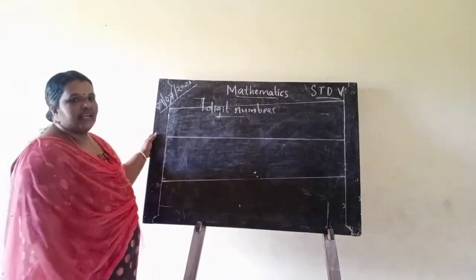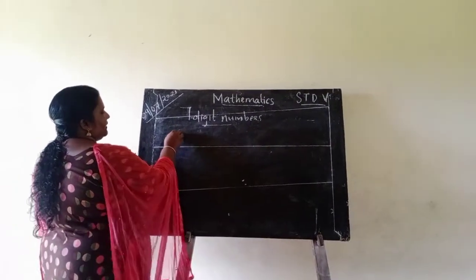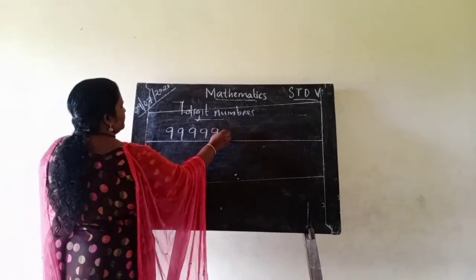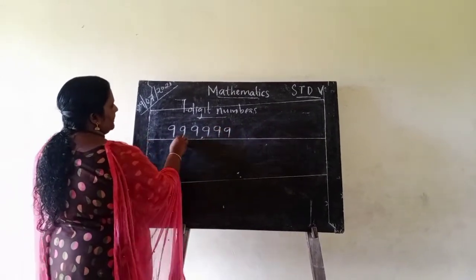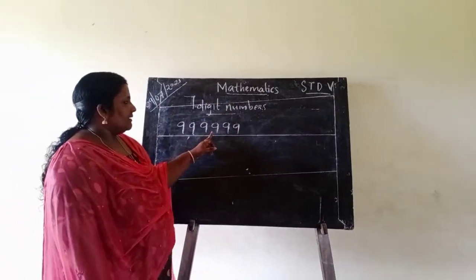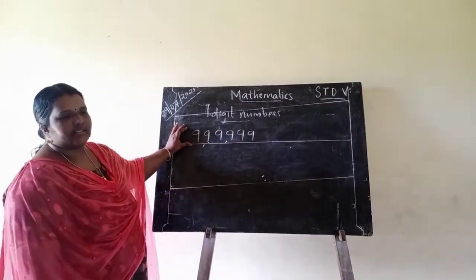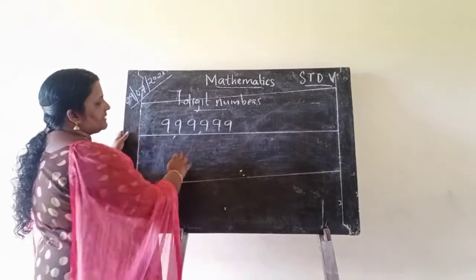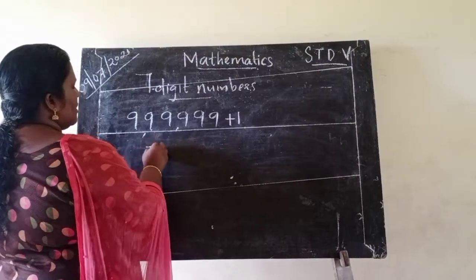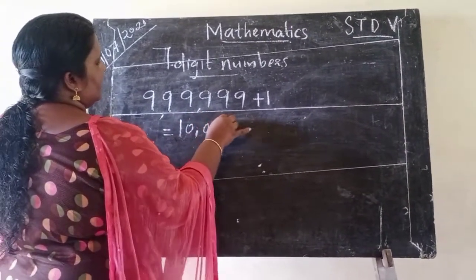Do you remember which is the greatest 6-digit number? Do you remember the six 9s? 9,99,999 is the greatest 6-digit number. The greatest 6-digit number plus 1, we get the smallest 7-digit number. That is 10 lakh.